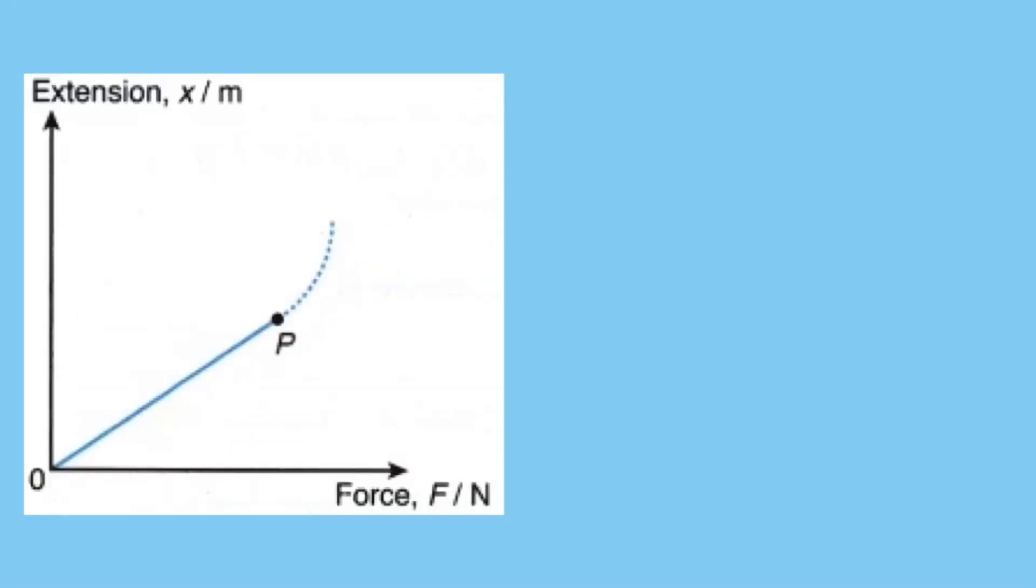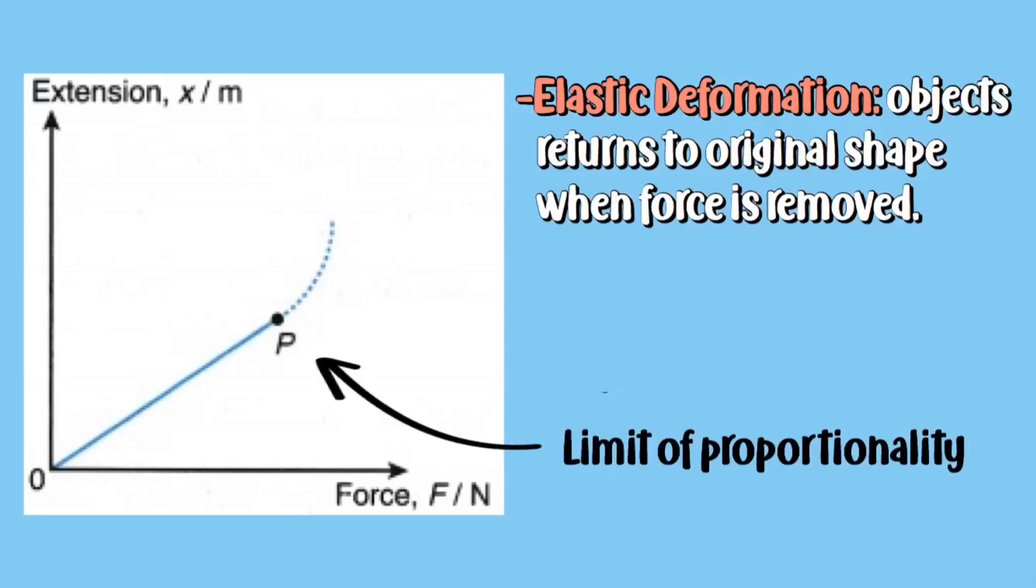This graph is a representation of Hooke's law. The point P is the limit of proportionality, so anything before point P is elastic deformation. This is when object returns to the original shape when the force is removed.